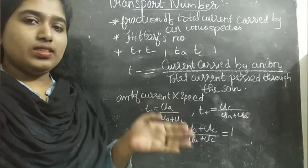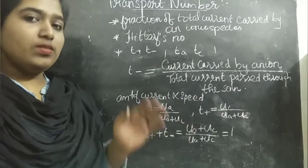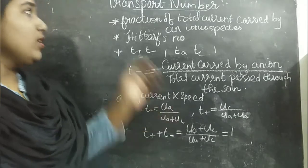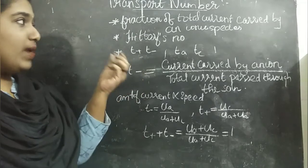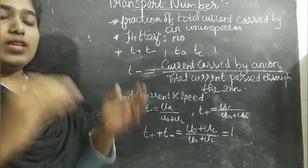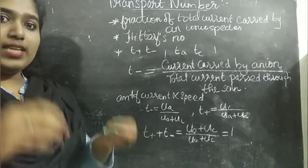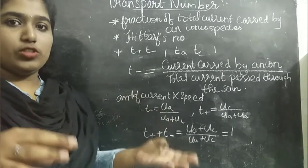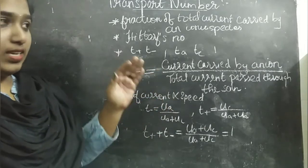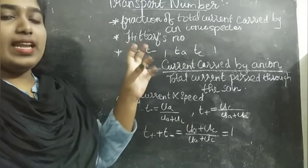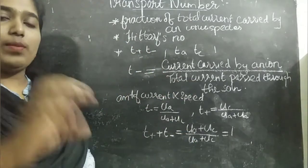First we will learn the transport number. We have many other topics but today we will learn transport number. Transport number means the fraction of the total current carried by an ionic species. Consider a solution which has an electrolyte — an electrolyte ionizes into a positive ion and a negative ion. The fraction of the total current carried by that particular ion is called the transport number of that ion.